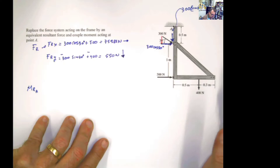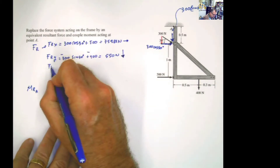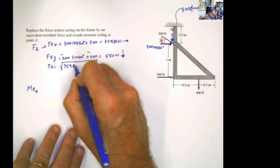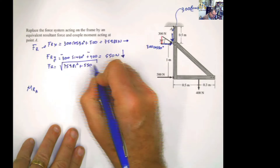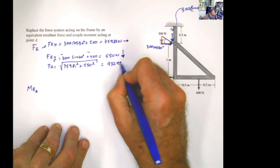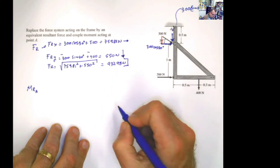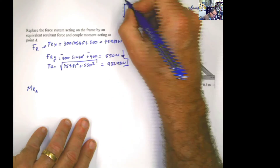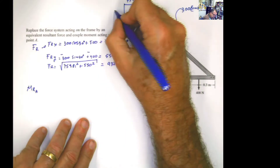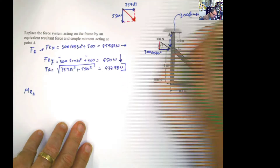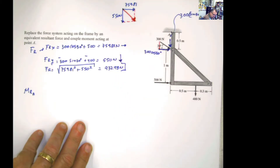If I want to find the resultant force, the magnitude will be the square root of 759.81 squared plus 550 squared, and the resultant force will be 937.98 Newton. I plot the 759.81 and the 550 Newton components, apply the parallelogram law and complete the box, giving this resultant force with a magnitude of 937.98 Newton.